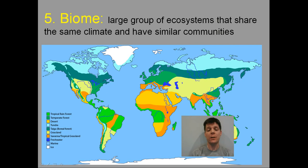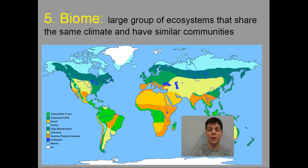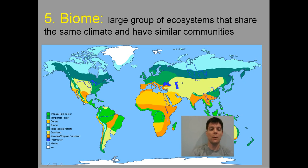The next level of organization in ecology is the biome. Biomes are large groups of ecosystems that share the same climate and have similar types of communities. One example of a biome is tropical rainforests, found near the equator in South America, Central America, and Africa — areas with warm temperatures and very high levels of rainfall. Other examples of biomes include deserts, such as those in the southwestern United States and Mexico.